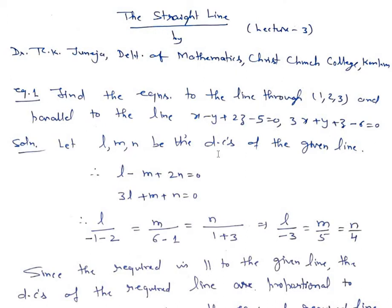Suppose l, m, n are the direction cosines of the given line. This line will lie on both planes, so the normals to these planes will be perpendicular to the line. Direction ratios of the normal to the first plane are 1, minus 1, and 2, so we have l minus m plus 2n equals 0.